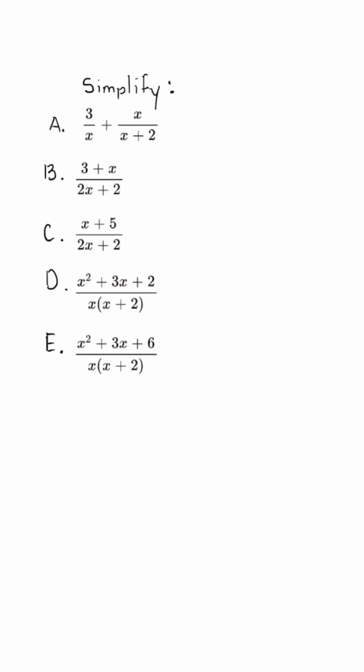When we're simplifying rational expressions by adding, just remember we have to have a common denominator. So the common denominator would be x times x plus 2.